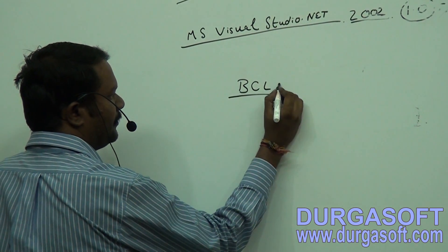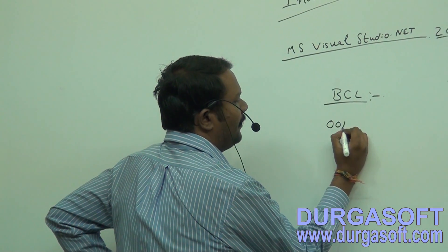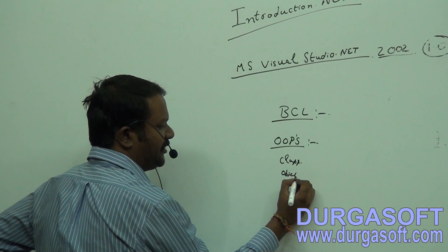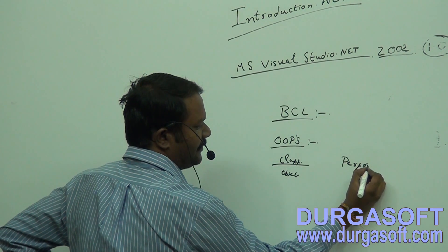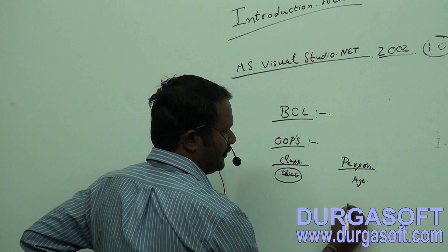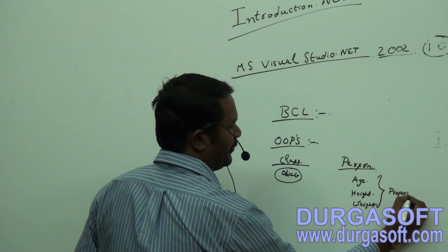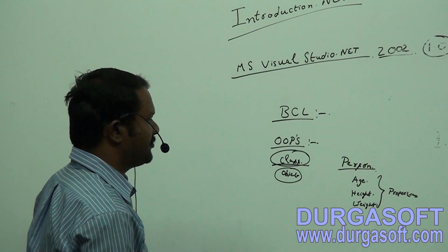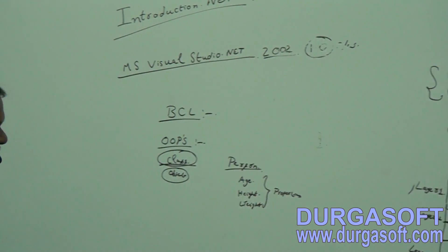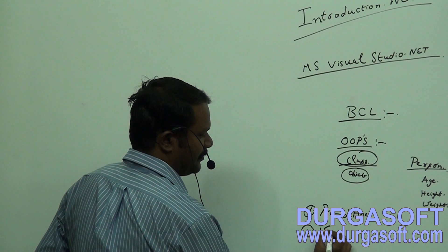So what is a Base Class Library? In the OOP concept, you need to create a class. For example, Person is a class, and you need to create an object to use this class. An object like Person will have properties such as Age, Height, and Weight. All the classes which you create in .NET will be stored in the Base Class Libraries as DLL files. There are two types of Base Class Libraries: Predefined and User Defined.